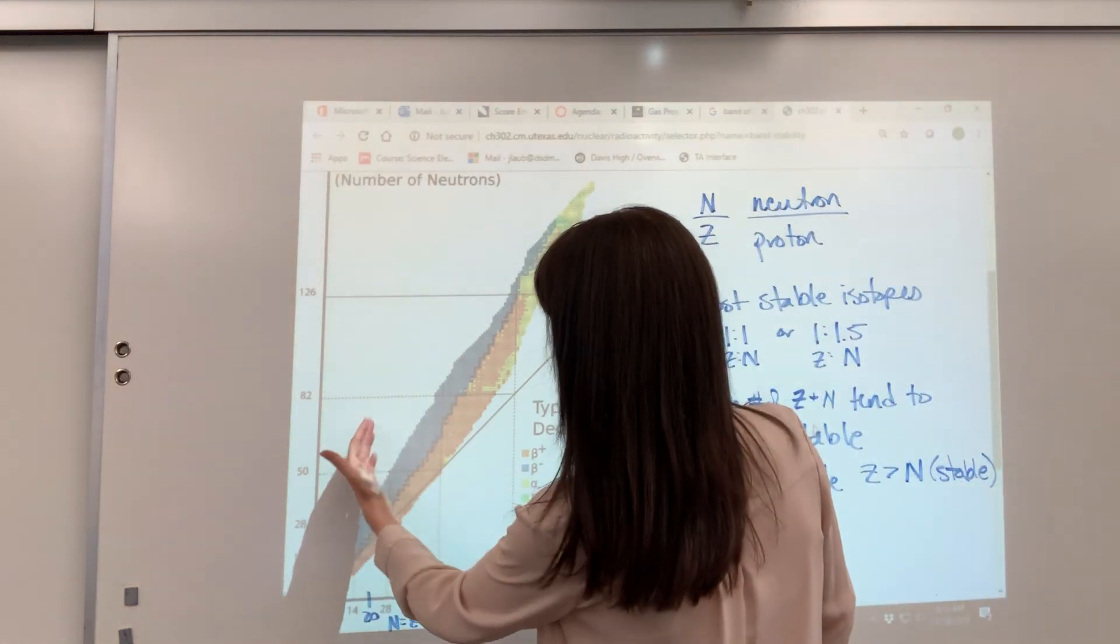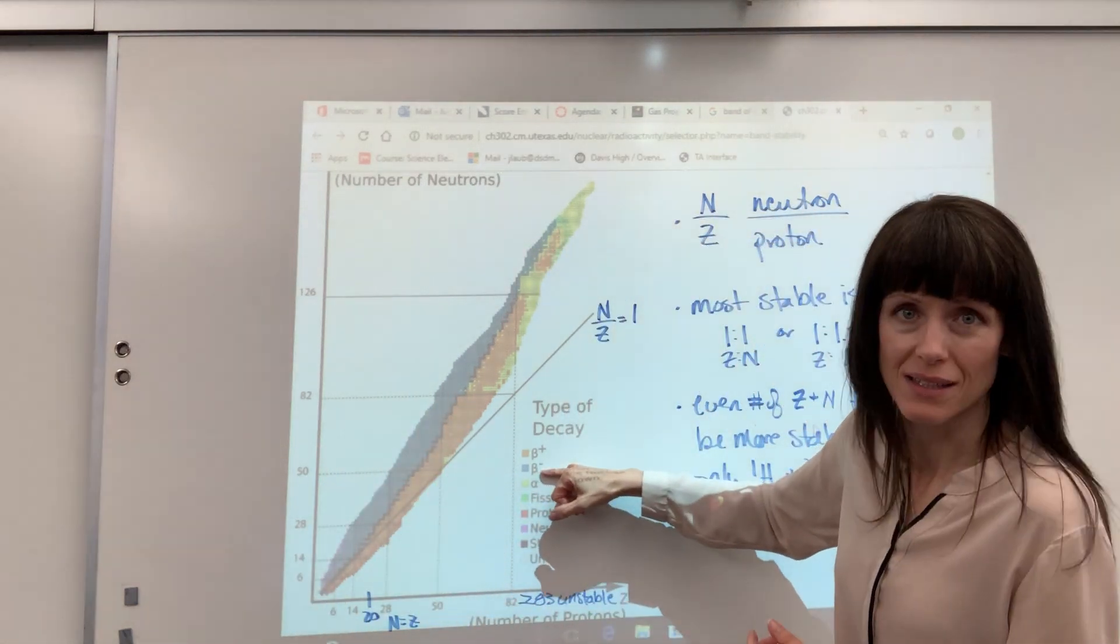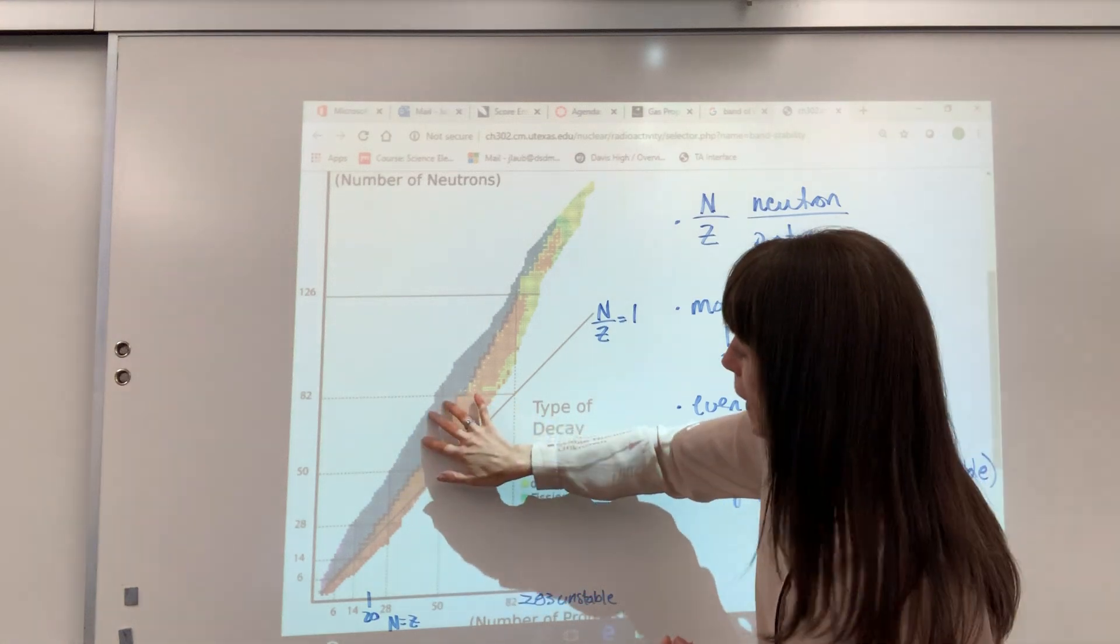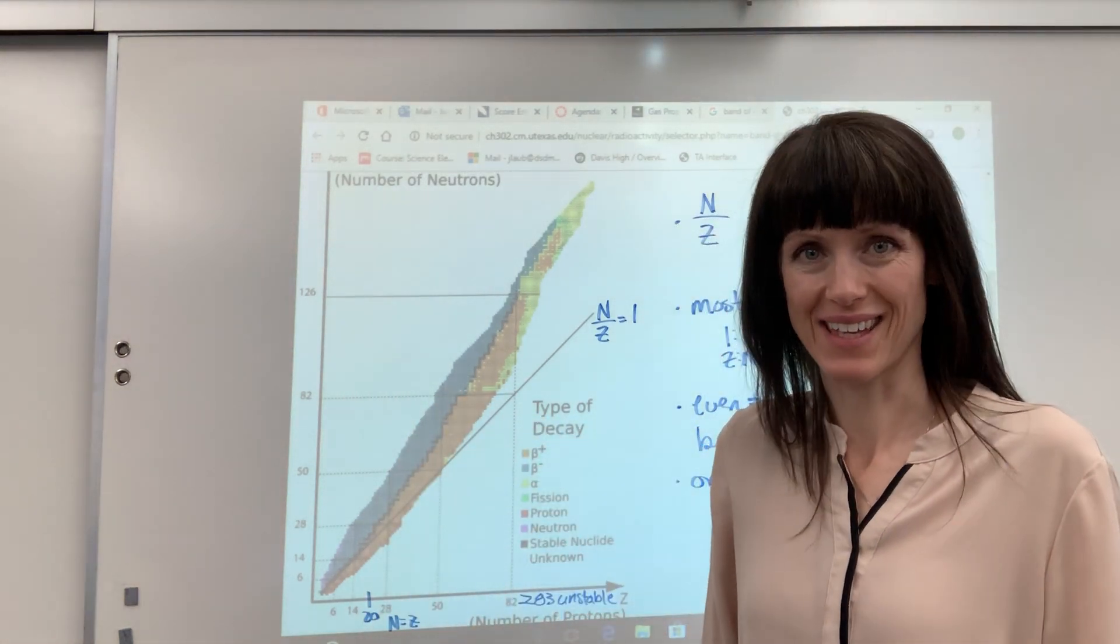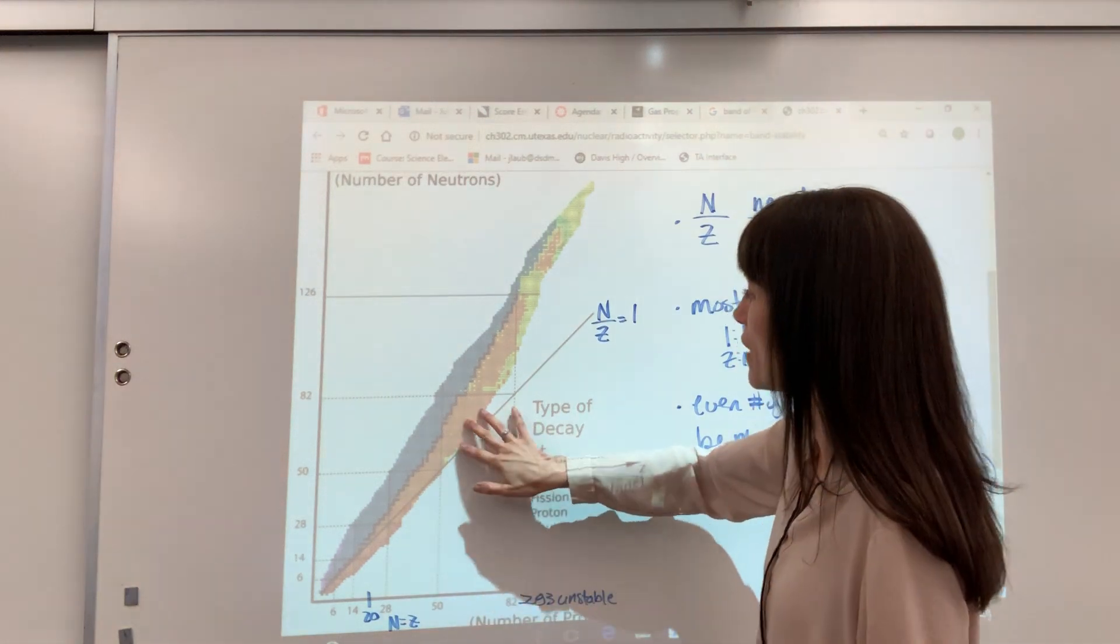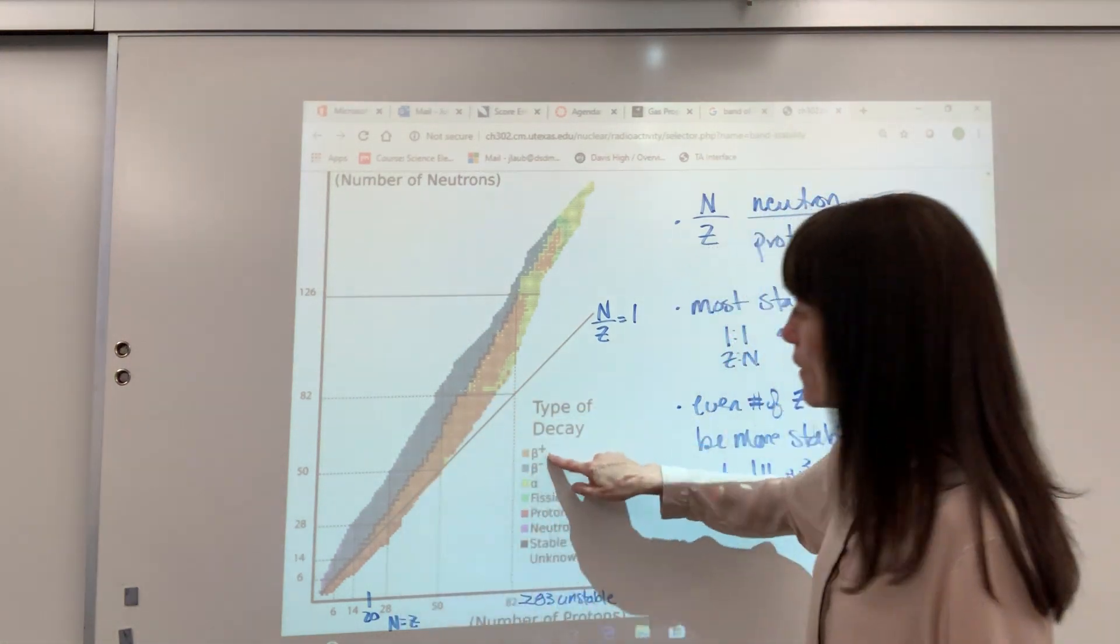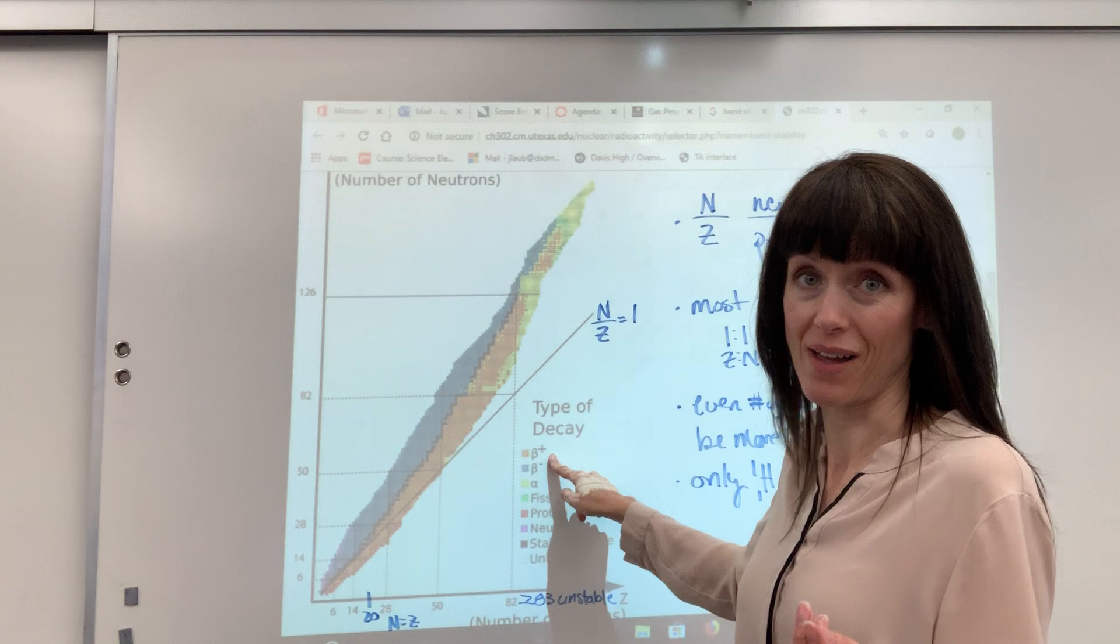Now, to our left right here. Notice this, the little B-. This is showing that these isotopes undergo beta decay. The isotopes on this right-hand side, this orange, they undergo positron decay.